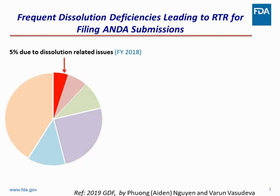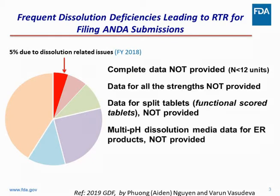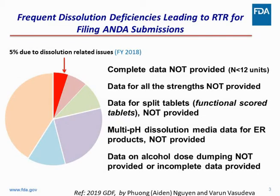These are a few deficiencies that you might have seen in the morning. It's like incomplete dissolution data — when you have multiple strengths, data not provided for all the strengths, or for modified release products, ER products. So you don't have multi-media dissolution testing. And when there is a need for alcohol dose dumping data, the data is missing.